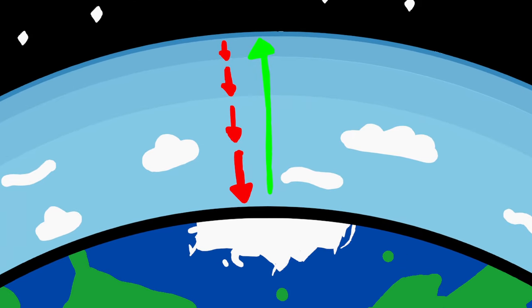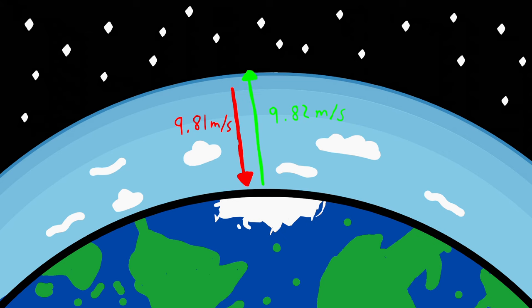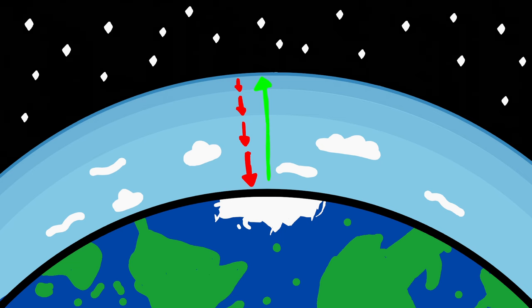Gravitational pull is something that gets weaker and weaker the further you get from the center of mass of an object. But escape velocity is different from constantly adding speed to counteract gravitational pull — that would consist of constantly applying an acceleration greater than 9.81 meters per second to outpace gravity. Escape velocity is strictly about reaching a specific velocity and has nothing to do with maintaining a constant acceleration. More specifically, it's about reaching a high enough velocity where you don't need to apply additional acceleration or propulsion in order to escape the gravitational pull.